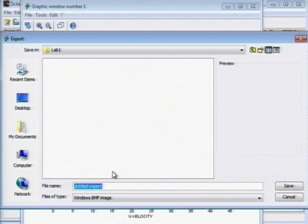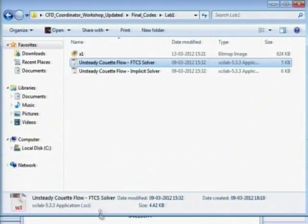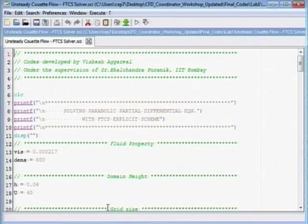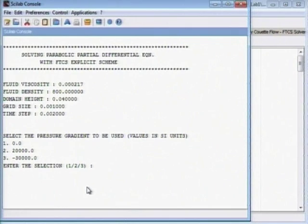It will by default get stored in Lab 1, the folder Lab 1. Why don't we just look at some other value of dp/dx just for completeness? To rerun the code again, go to the source code and we will again press this execute icon. If you go back to the console window, the code has started again. Say this time I select option 3, that's dp/dx of -30,000.